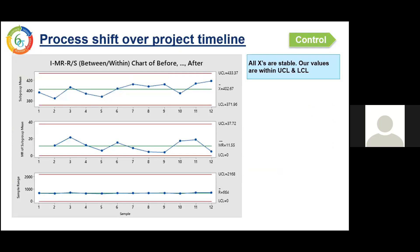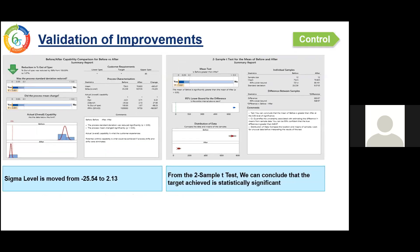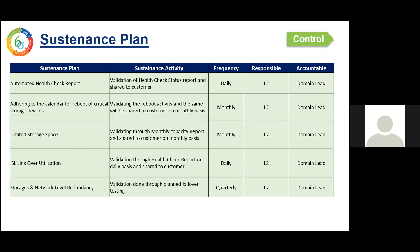We monitored our Xs using an IMR chart. All the Xs are stable and well within upper and lower control limits. As a testimony to our efforts, our Sigma value has improved from minus 25.54 to 2.13. We have also statistically validated our improvement and it is significant. We have chalked out a detailed sustenance plan for the same.